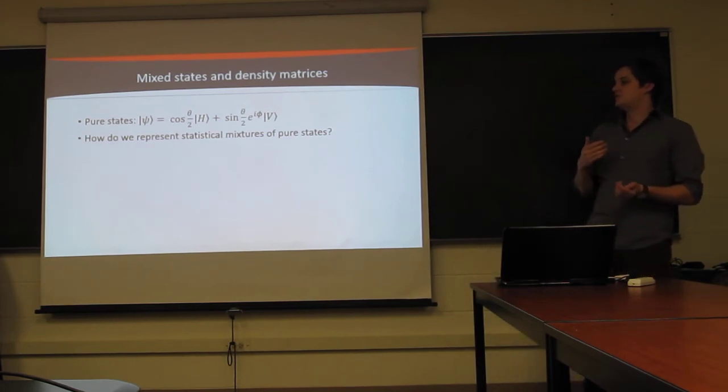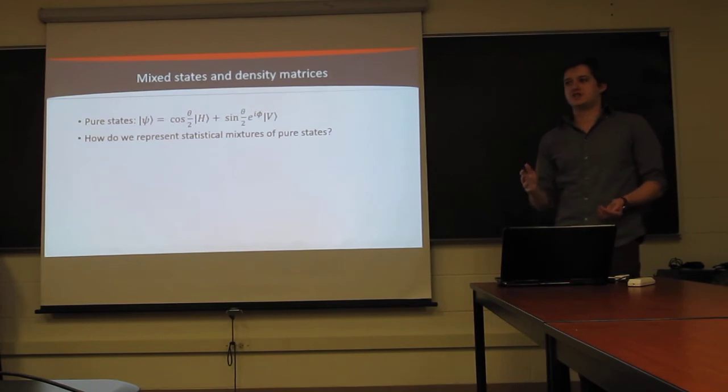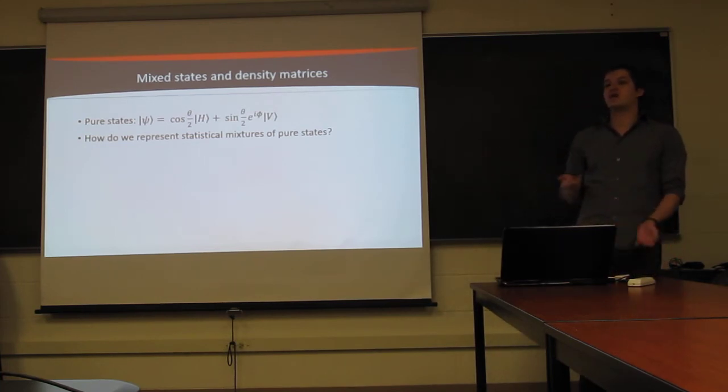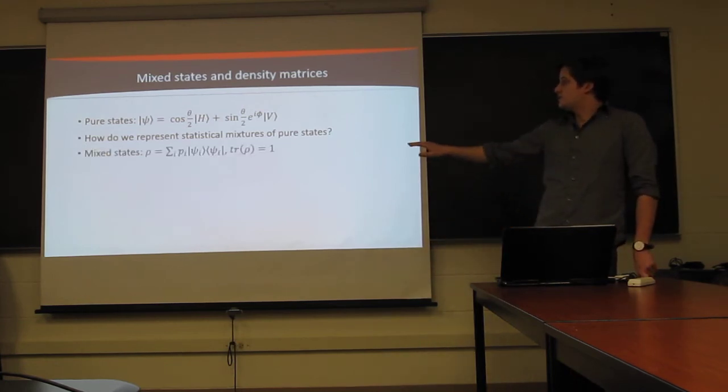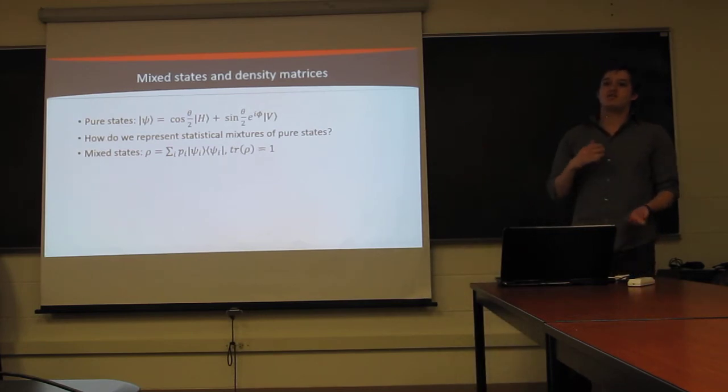But oftentimes, due to imperfections in our system, we don't actually just have one pure state coming out. Oftentimes, we'll end up with some statistical mixture. And how do we actually want to deal with this? The answer is with density matrices. Basically, this is just a combination of pure states that we've weighted probabilistically. So, that's why we have to require that the trace of this matrix is equal to 1. That sets it so that the probability of any measurement we make on it will always add up to 1.